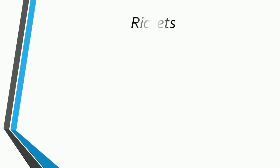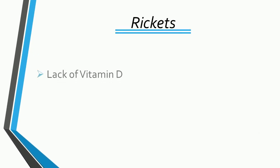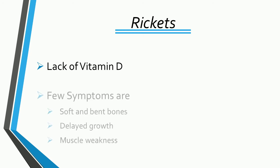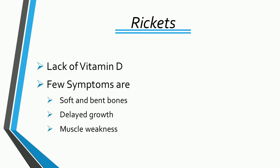Rickets happens in the body when there is a lack of vitamin D. Few symptoms of rickets are soft and bent bones, delayed growth, and weak muscles.